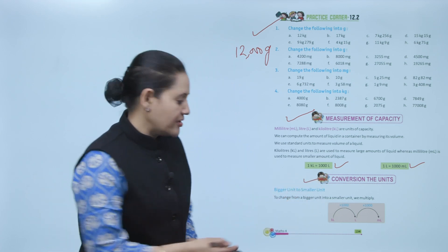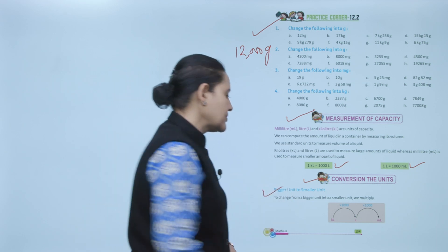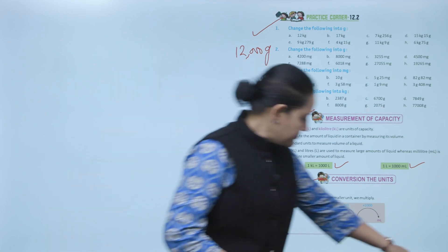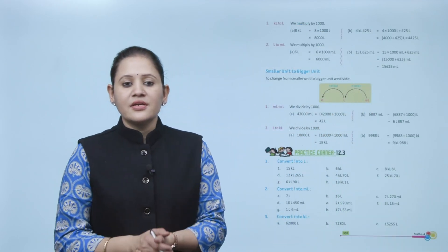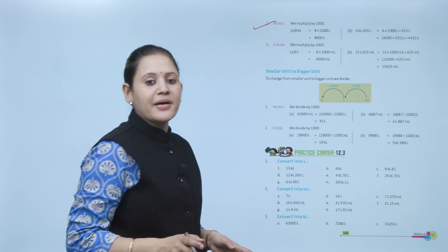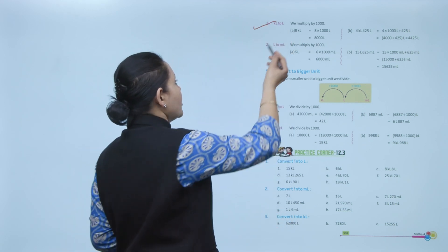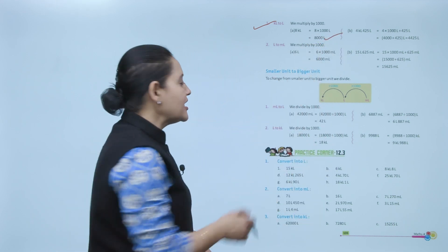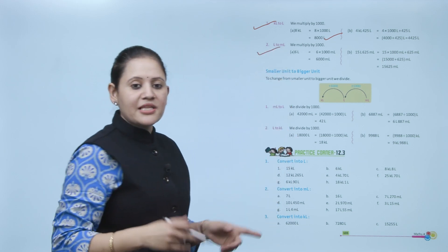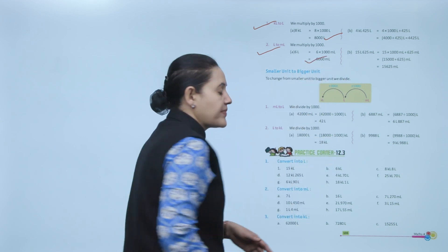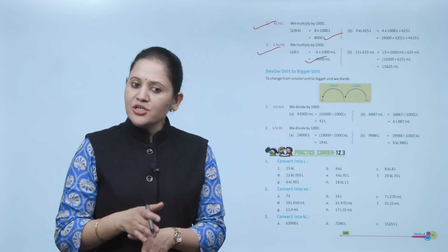Bigger unit to smaller unit: to change from a bigger unit to a smaller unit, we multiply. Kiloliter to liter: multiply by 1000. So 8 kiloliters equals 8 × 1000 = 8000 liters. Next, liter to milliliter: multiply by 1000. So 6 liters equals 6000 milliliters. Next is smaller unit to bigger unit.